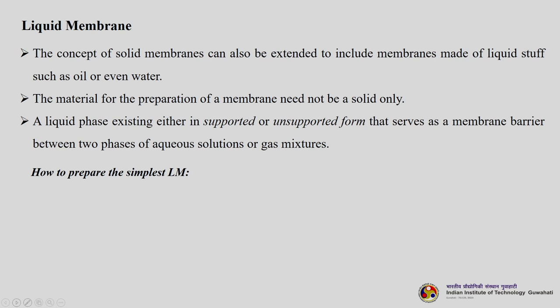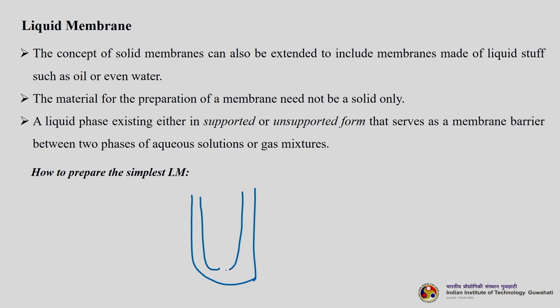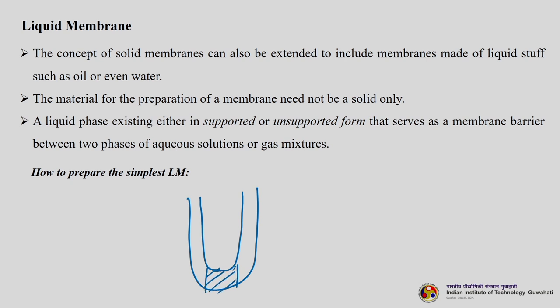Let me explain how we can prepare a liquid membrane in a very simple way in the lab. Most of you have seen U-tube manometers used to measure pressure readings. So in the simplest form, we have a U-tube with two limbs. You pour your membrane liquid — either water, oil, or any organic solvent — into one of the limbs, and it will come down and settle at the bottom. This is your liquid membrane part.